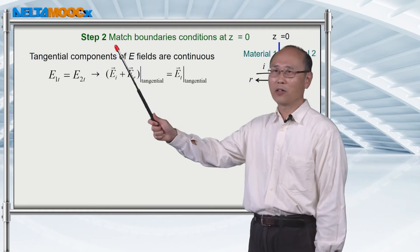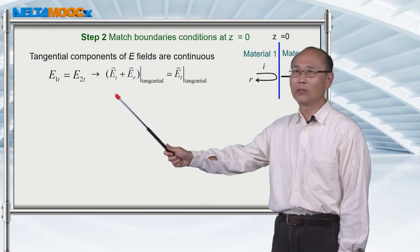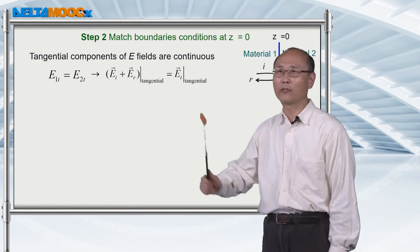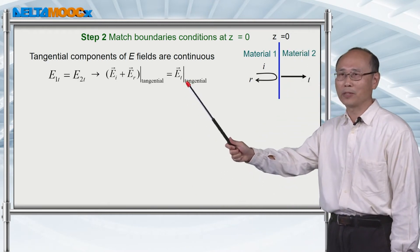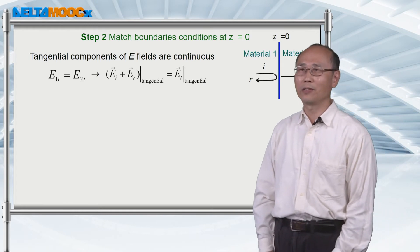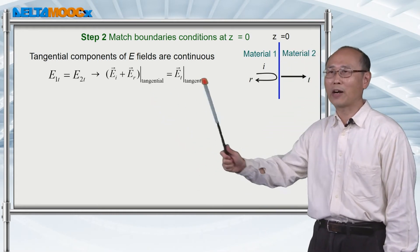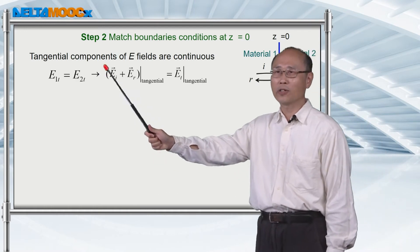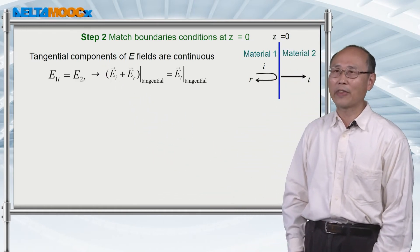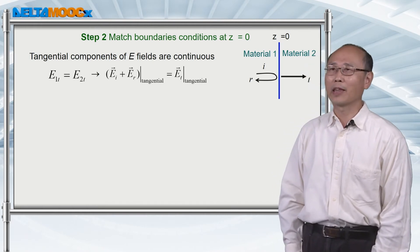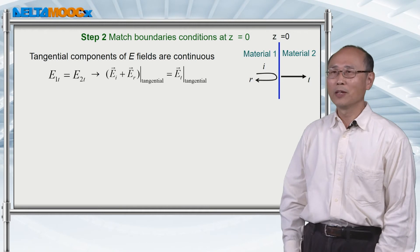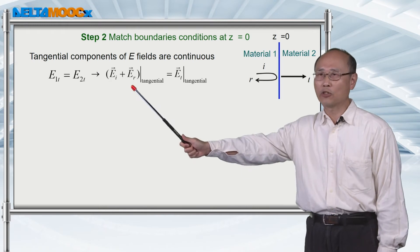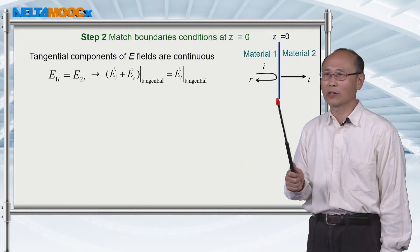Now let's go to step two. In general, you know the amplitude of the incident field, but you don't know the reflected amplitude or the transmitted amplitude. So you need boundary conditions to figure out the unknown variables. Regardless of the materials, the tangential component of the electric field is continuous across the boundary — this is a conclusion from Maxwell's equations that you can always apply.